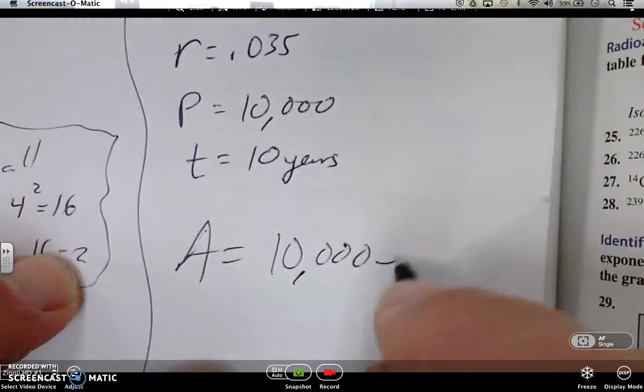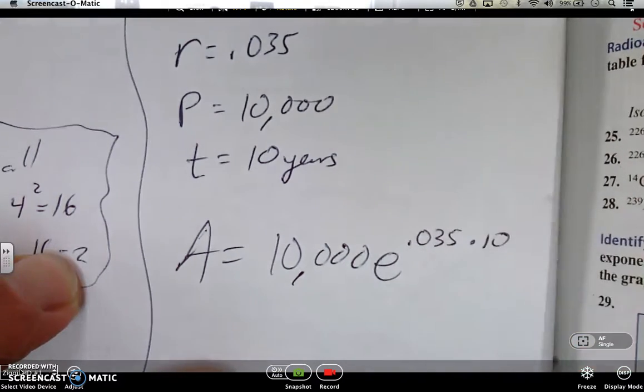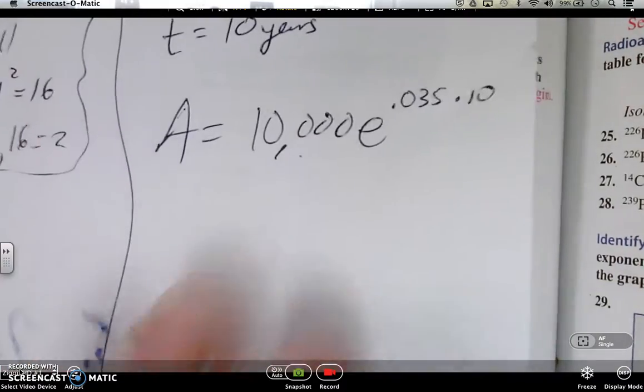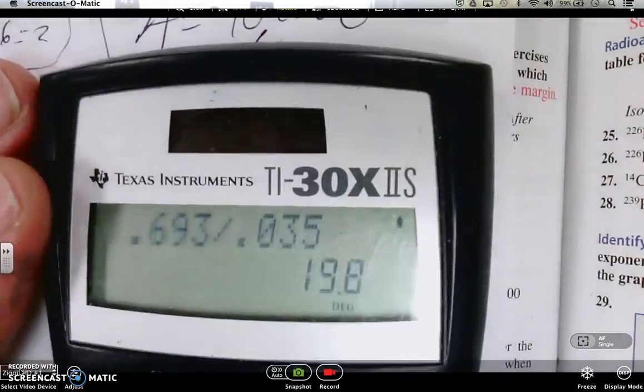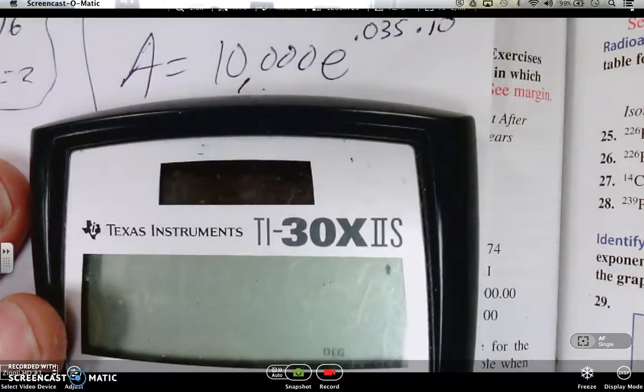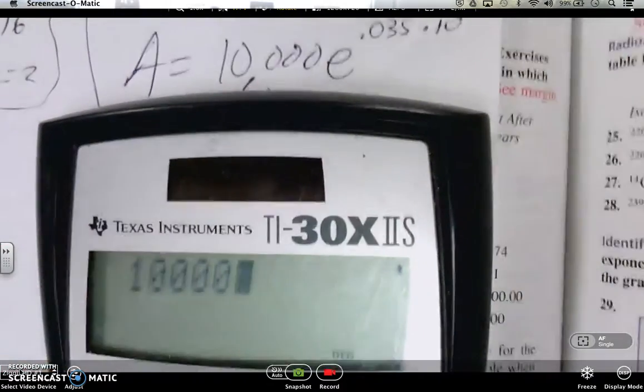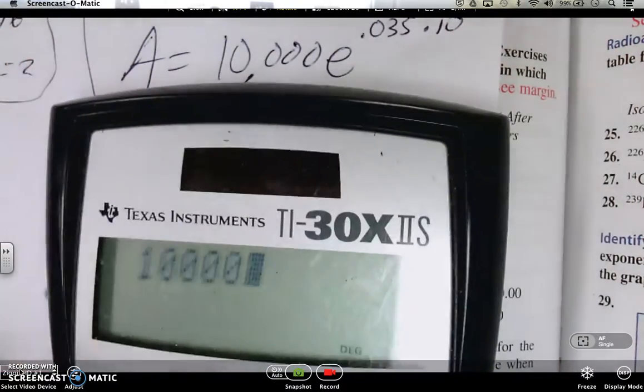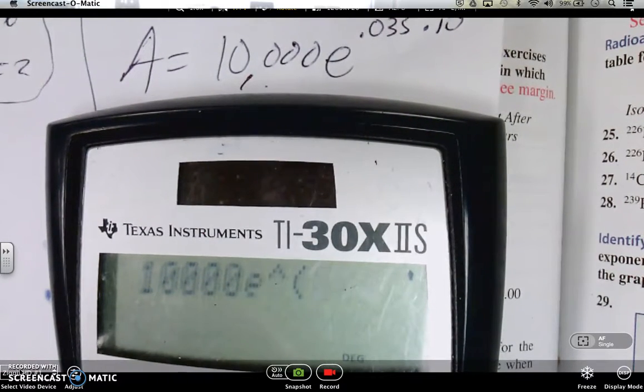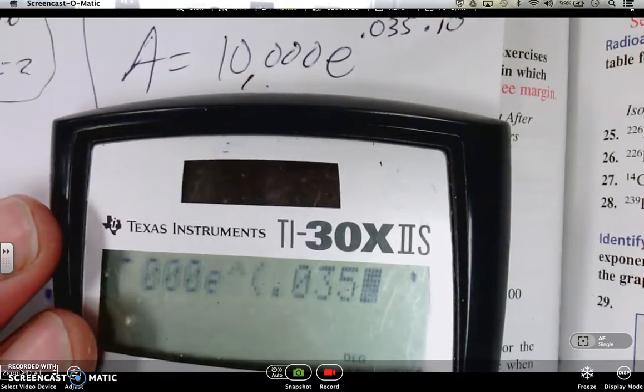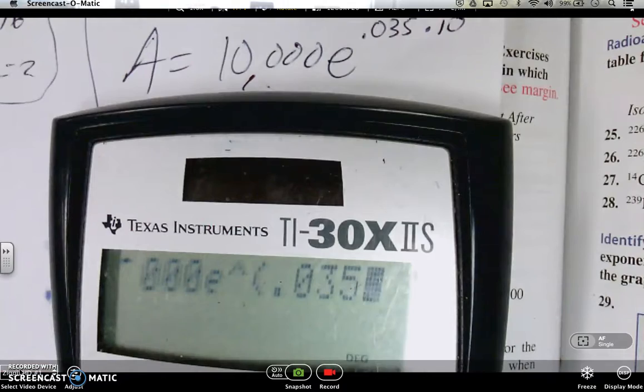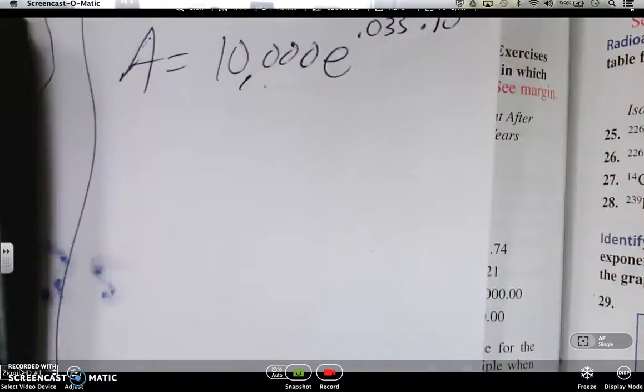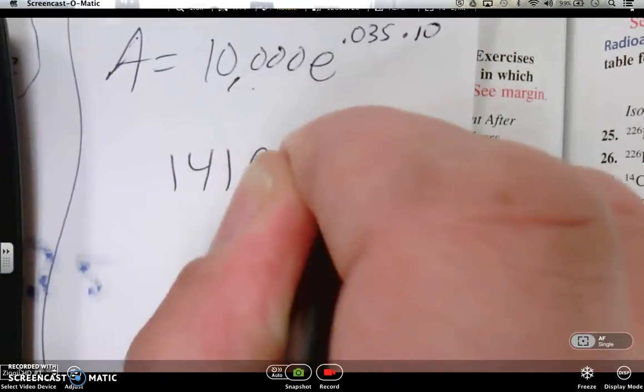A equals $10,000 times e to the .035 times 10. We have all the things we need. We have the principal. We have the rate. And we have the time. Throw this into a calculator. Now when you put this in a calculator, that's the only part you have to be careful about. Is type it in correctly. So let's see if we can fit this both on the screen. So $10,000. Now you got to go second and then e button. My calculator has an e button. Yours should too. .035 times 10. And this calculator is nice. You'll notice it gave us the parentheses. So just type it in exactly as it looked. Blam. There's your answer. 14190.68. We'll round it off. And again, what was that? That was your amount.